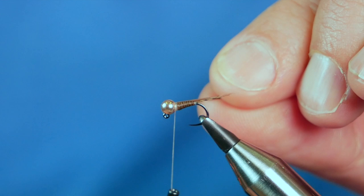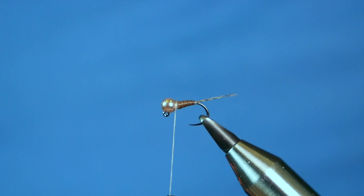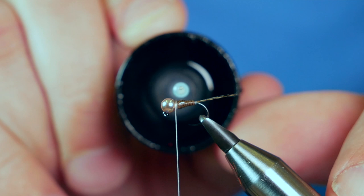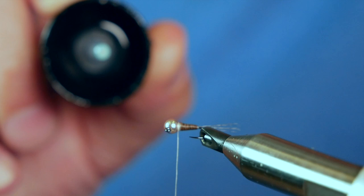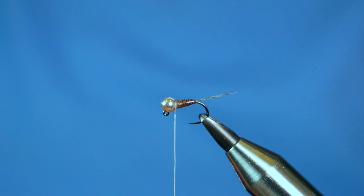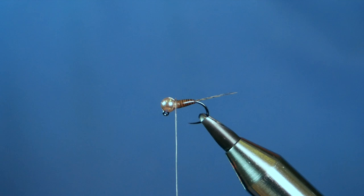Now I want to protect that so I'm just going to use a little bit of UV resin. It doesn't take much, just enough to keep it in place so that it lasts more than one fish. There we go. Then give it a quick blast with your UV pen. Just make sure it's all cured.